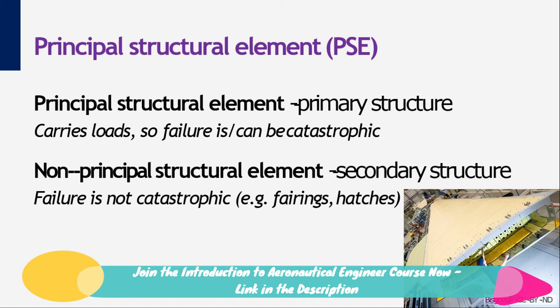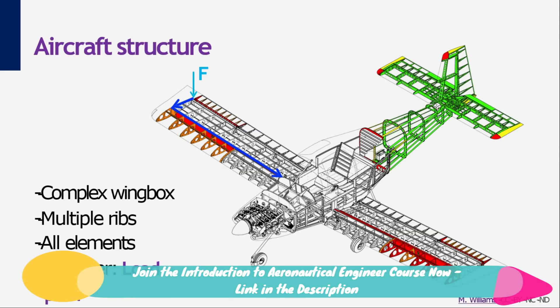Examples of secondary structure components are hatches and fairings — for aerodynamic reasons, think about the fairing between the wing and the fuselage. This picture shows the structure of a small aircraft. You can see the fuselage structure with frames and stringers, and the wing box with spars and ribs. All these elements work together in carrying load and protecting the payload and systems.